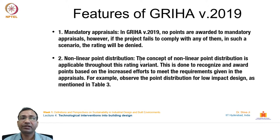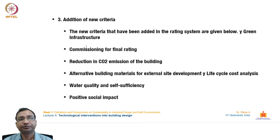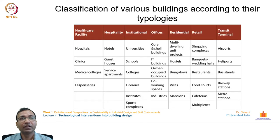The non-linear point distribution recognizes and awards points based on increased effort to meet appraisal requirements. New criteria added in GRIHA 2019 include green infrastructure, commissioning for final rating, reduction in CO₂ emissions, alternative building materials for external site development, life cycle cost analysis, water quality and self-sufficiency, and positive social impact.